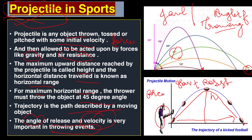So if someone asks what a projectile is: any object thrown, tossed, or pitched with initial force into the air is a projectile. Two forces act on it — gravity and air resistance. The maximum upward distance is called height; the horizontal distance covered is called horizontal range. 45 degrees is considered the best angle for maximum horizontal range. The path the object describes is called its trajectory.